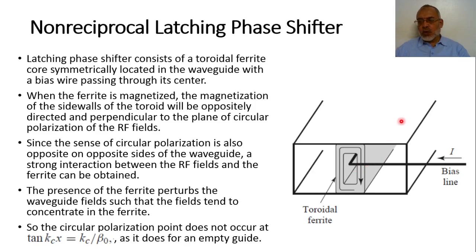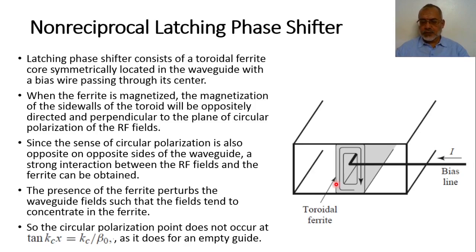According to the length of this ferrite core, the phase shift will be either beta-plus times L or beta-minus times L. When the magnetization is in one direction, for example clockwise, it gives beta-minus; in the other direction it gives beta-plus. So for beta-plus we have one phase shift, and for beta-minus we have a different phase shift. That is why this type of phase shifter is called non-reciprocal, because it depends on the direction of wave propagation relative to the direction of the magnetization.